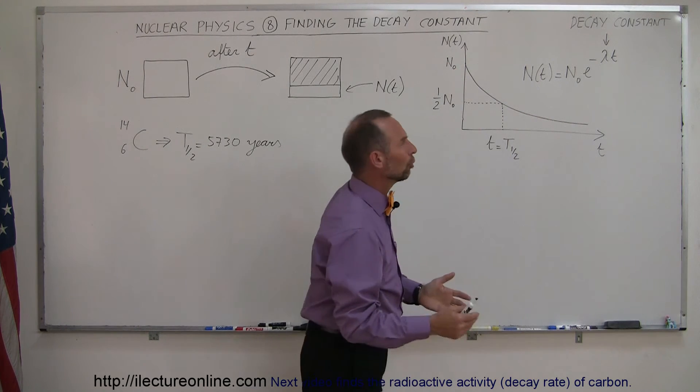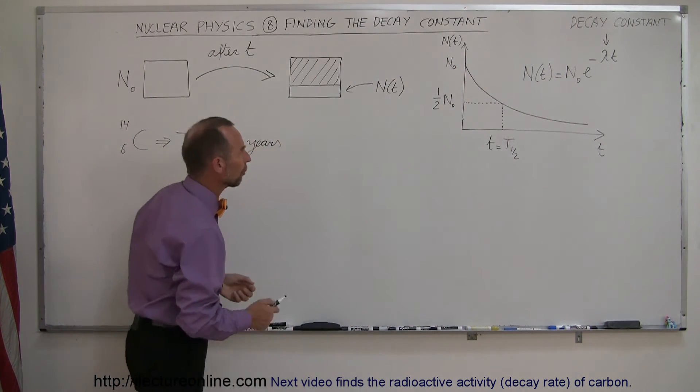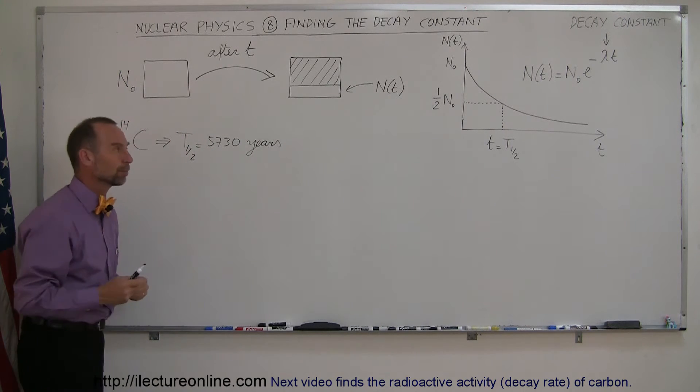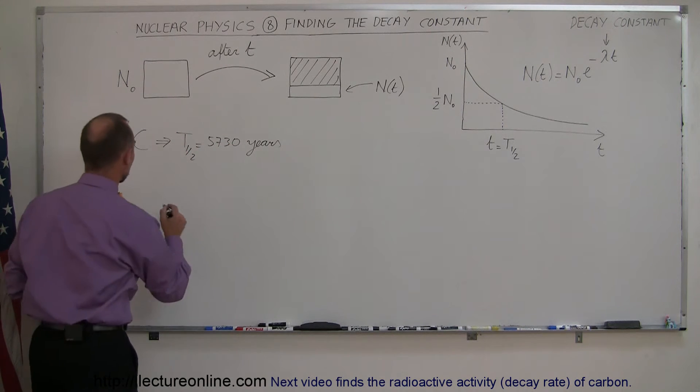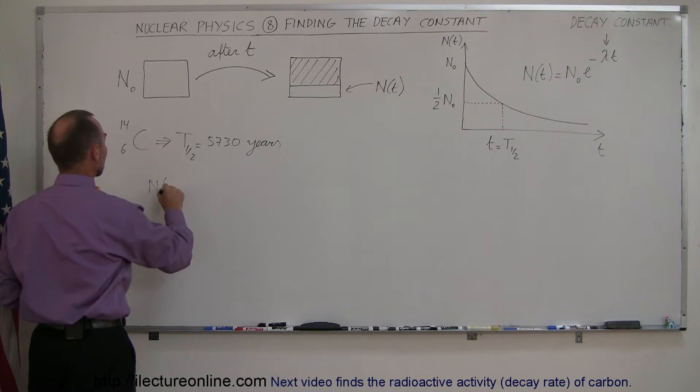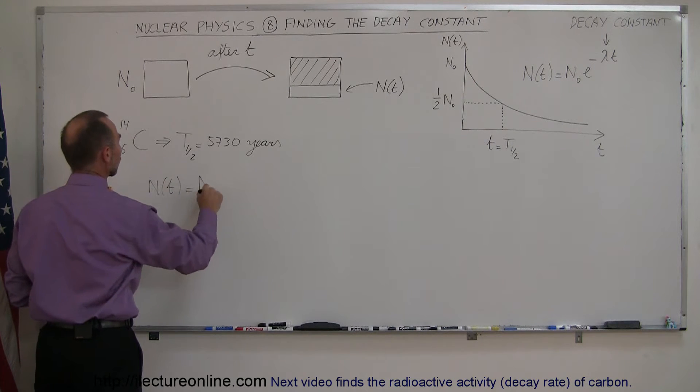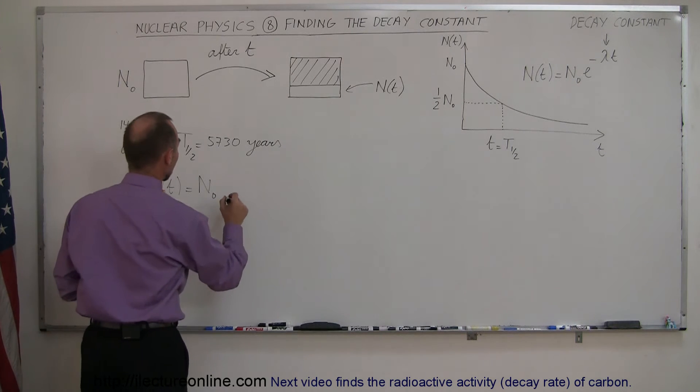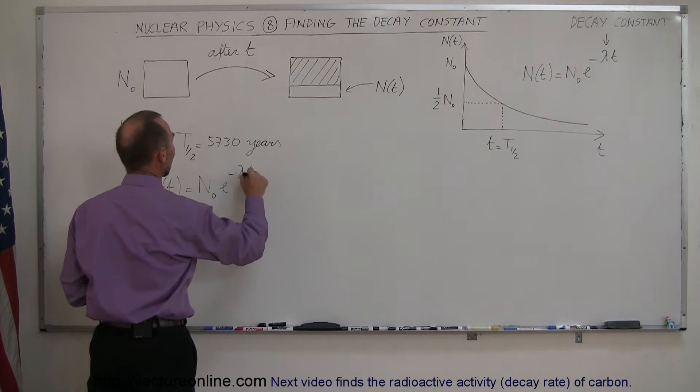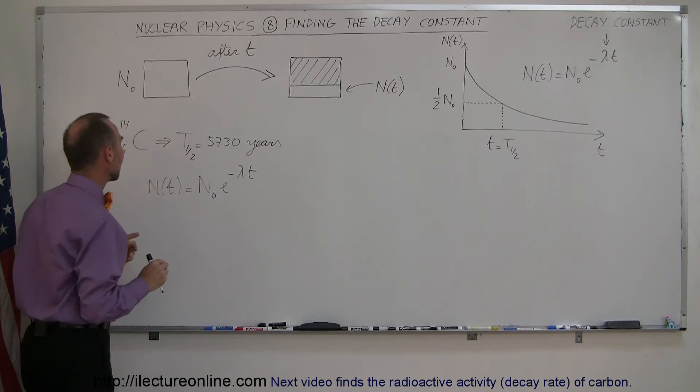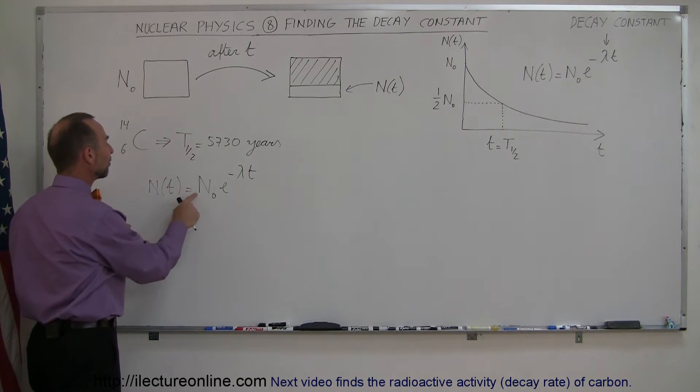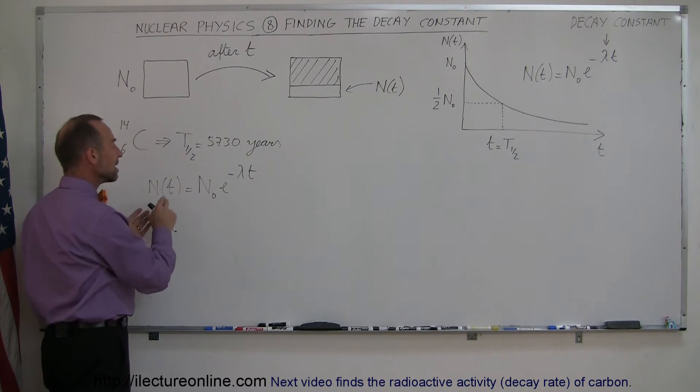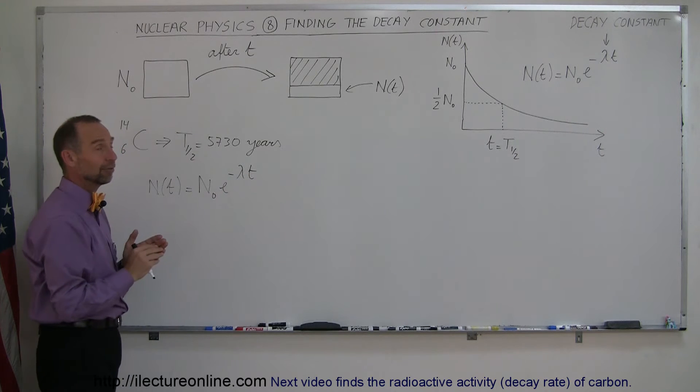So how do you determine that decay constant for a radioactive element, for example, for carbon-14? Well, by taking the equation, we can write that the amount at any point in time is equal to the amount you started with, and of course we're talking about the radioactive amount of that sample, times e to the minus lambda times t. And then we realize that this number will be half of that number when time t is equal to a half-life of that material.